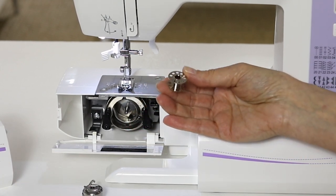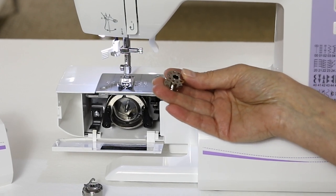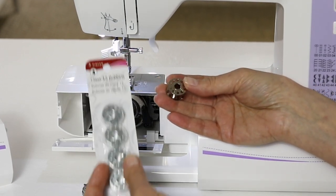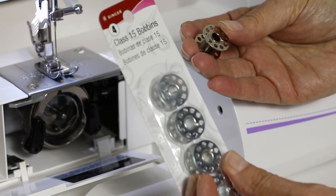This is a class 15 metal bobbin. If you ever want to purchase additional bobbins for your machine, make sure that you purchase Singer class 15 metal bobbins.